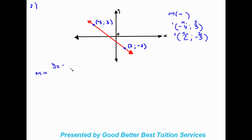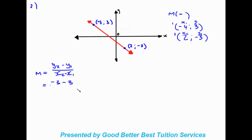m = y₂ minus y₁ over x₂ minus x₁. It's always important to write out the equation — they need to see that you understand the rule. y₂ is negative three, minus y₁ which is three, over x₂ which is two, minus negative four in brackets — because x₁ was negative four and there's already a minus sign from the rule.